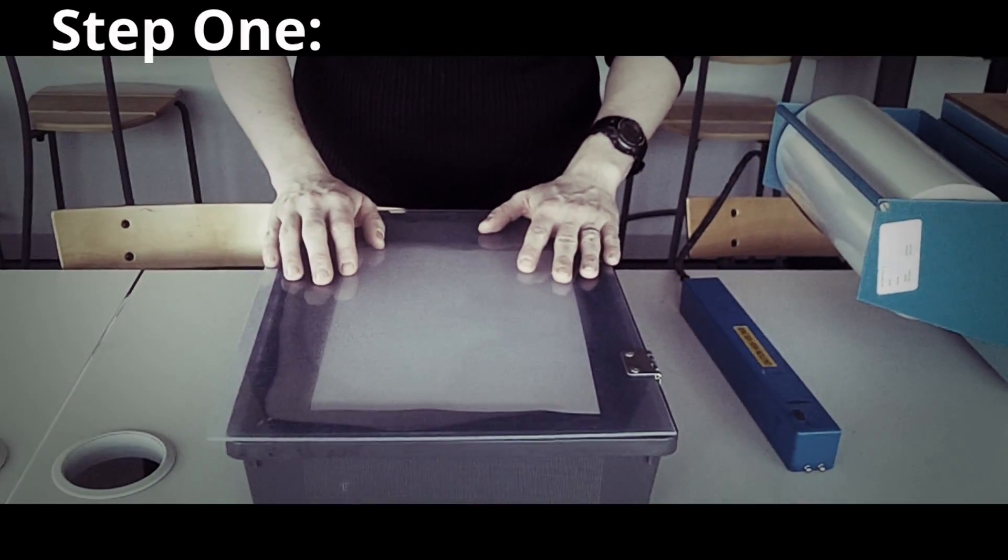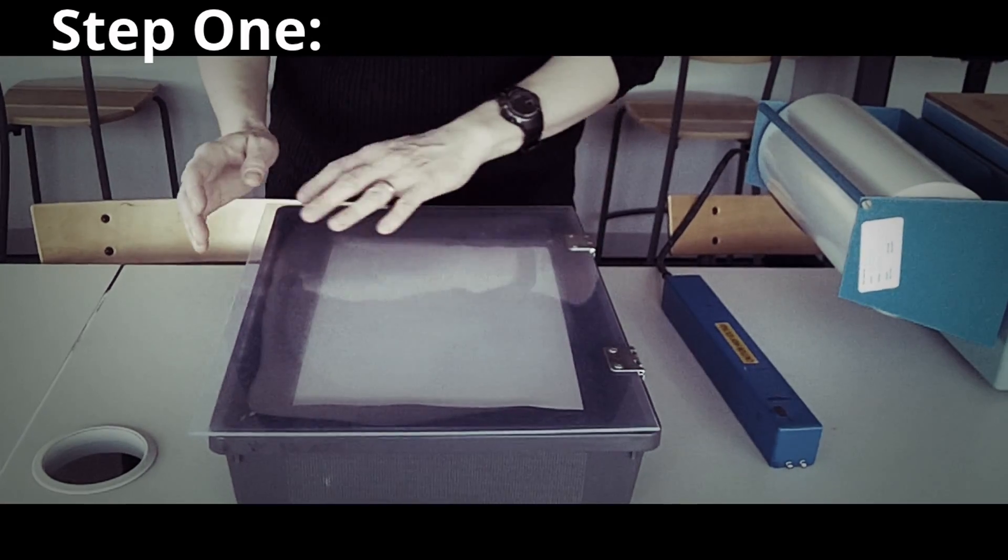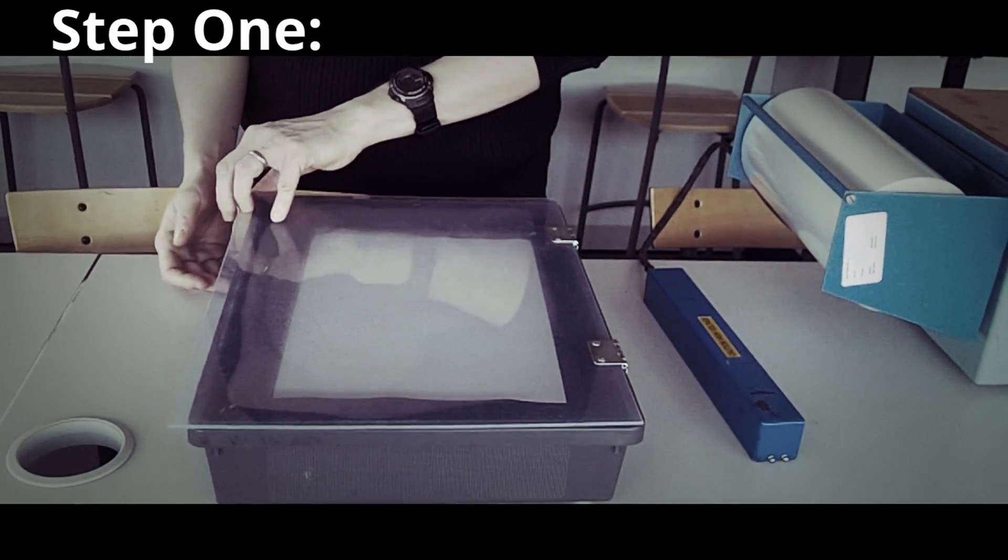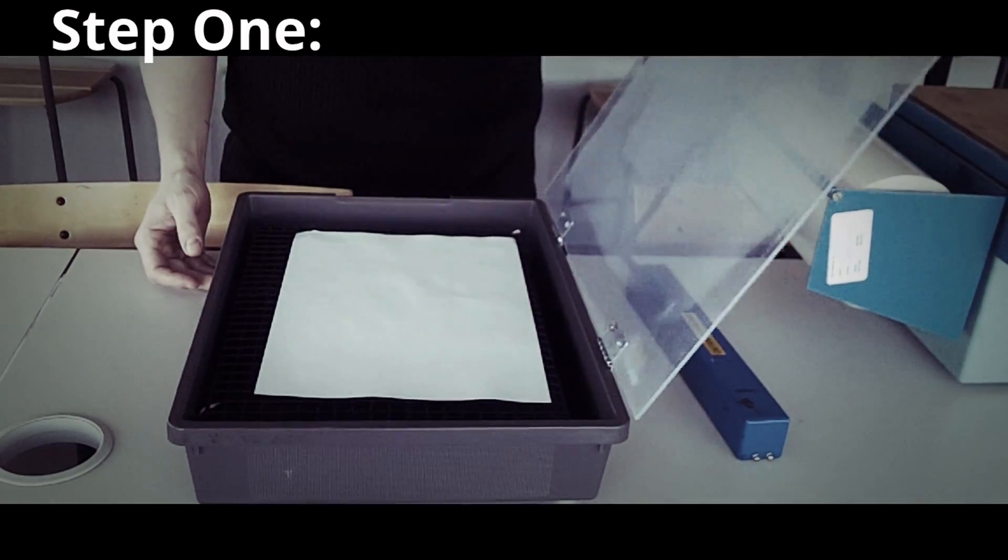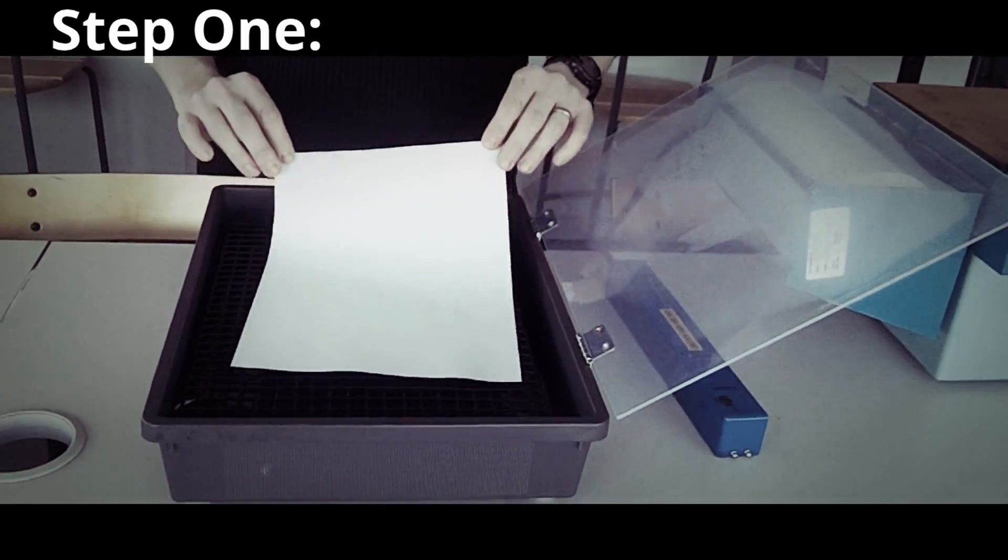The electrostatic detection apparatus, or ESDA, works on documents that have been subjected to humidity of about 70%. Prior to conducting an ESDA experiment, you need to place a piece of paper in a chamber containing water and leave for approximately 5 minutes.